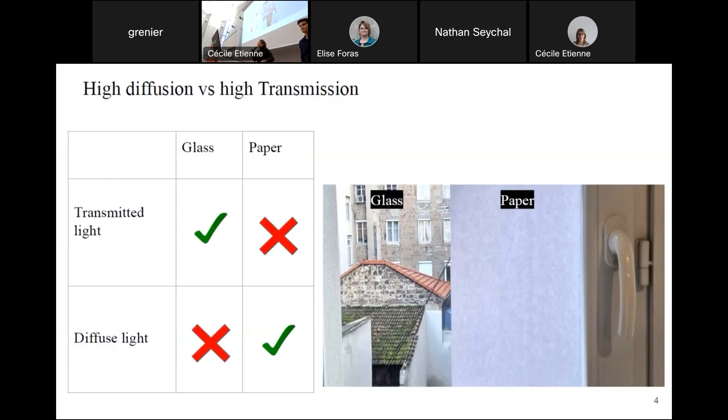It's very hard to combine all these properties in only one material. Let's take glass for example. It transmits a lot but doesn't diffuse at all. On the contrary, paper is a very good diffuser. The shapes are completely blurred. But it doesn't transmit so much.